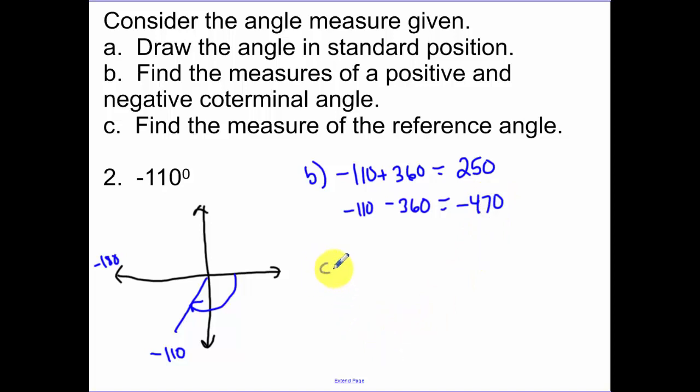Part C, my reference angle. So from this angle back up to the x-axis, the smaller angle that's up to the x-axis. So the difference between negative 180 and negative 110 is 70 degrees. Remember, that's an acute angle, so it has to be less than 90 and it's positive.